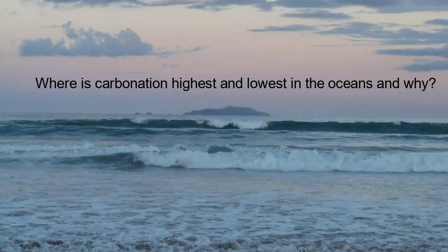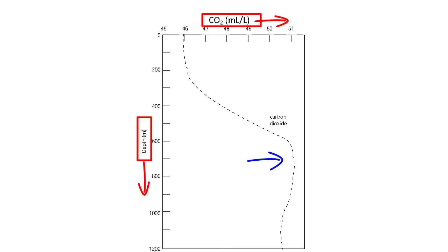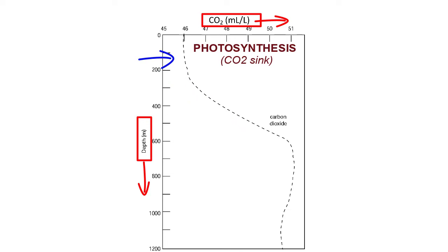What does changing solubility mean for the ocean's carbonation — where is it highest and lowest, and why? This graph shows carbon dioxide content on the x-axis and depth on the y-axis. Carbon dioxide is lowest at the surface but increases quickly as we descend into the oceans. Photosynthesis is the dominant biological process at the surface, removing carbon dioxide and producing oxygen.